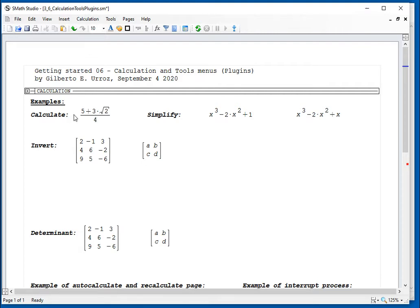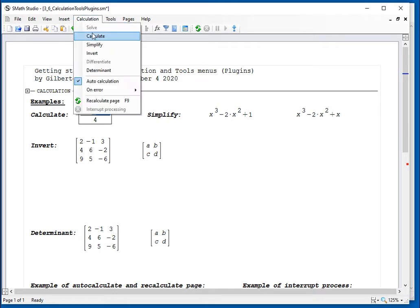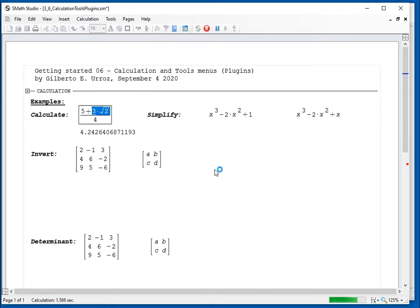For example, if I have this particular expression and I want to know what this expression alone is without getting the entire calculation, I can select that area. Just click to the left of the tree, drag your mouse to select three times the square root of two, go to calculation and say calculate. That tells me that three square root of two is 4.2426. So that's basically the idea.